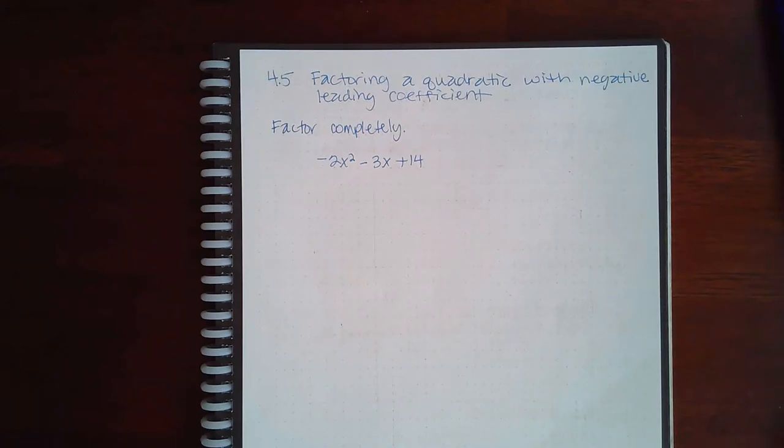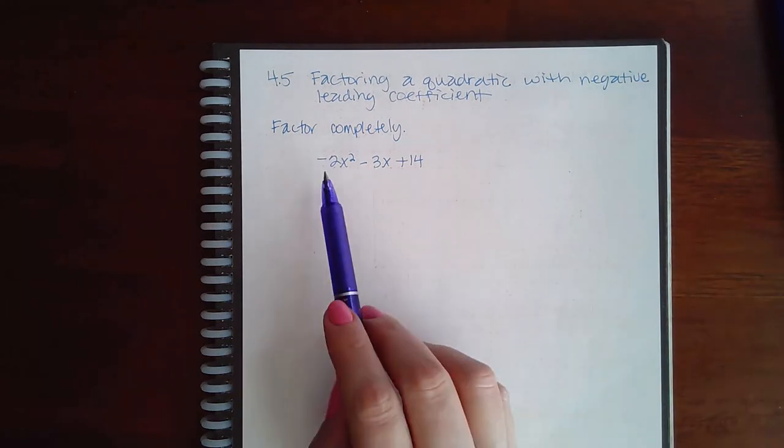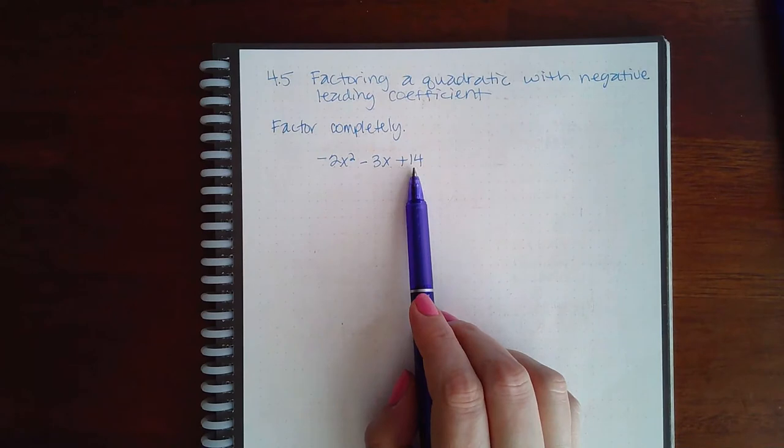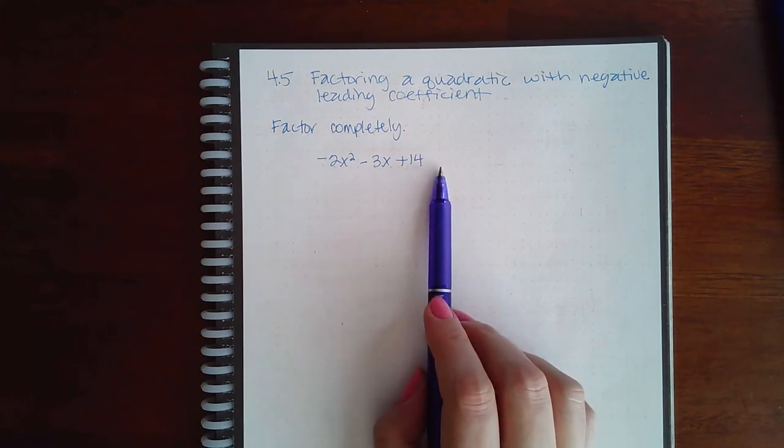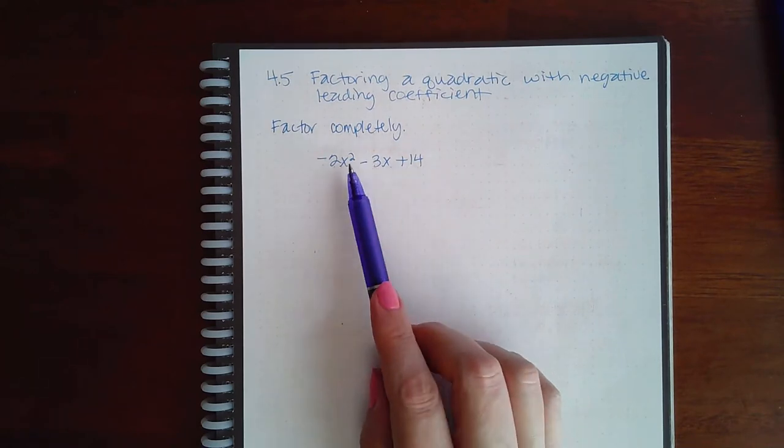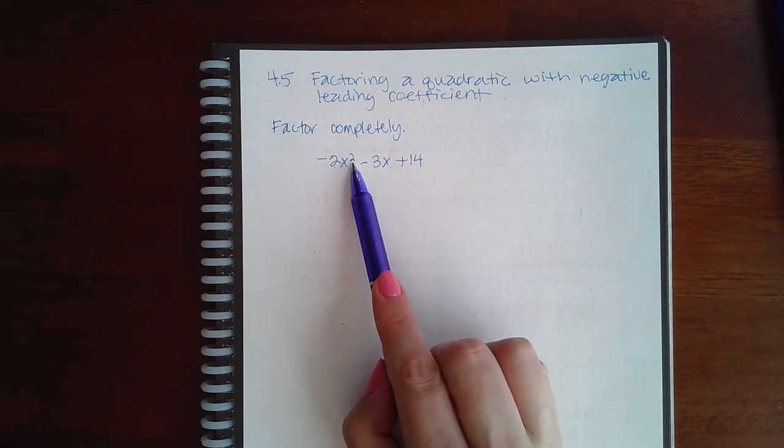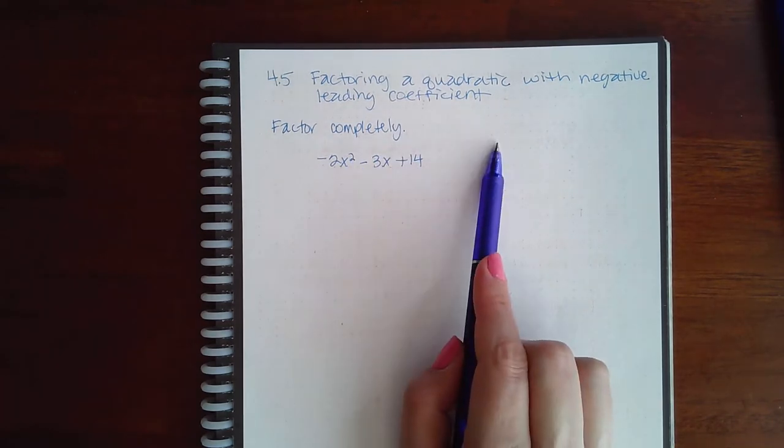Here we have 4.5 factoring a quadratic with negative leading coefficient. So as long as your expression here is in descending order, meaning that the variable with the highest exponent is first and that exponent decreases along the way.